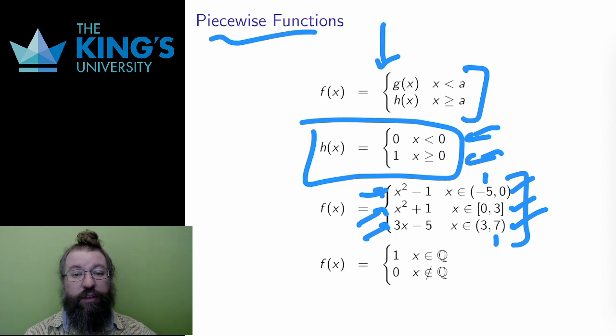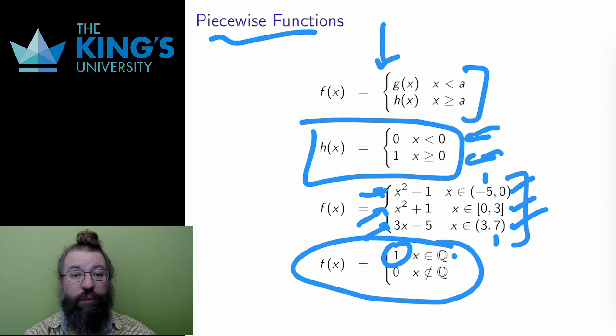The conditions for a piecewise function don't actually have to be inequalities or intervals. They can be any kind of mathematical conditions on the domain. This function is a function with domain of all real numbers. And if you input a rational number, this function outputs 1. But if you input an irrational number, this function outputs 0. And this is also a piecewise function.